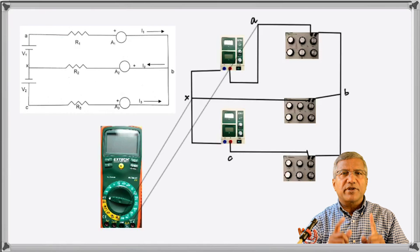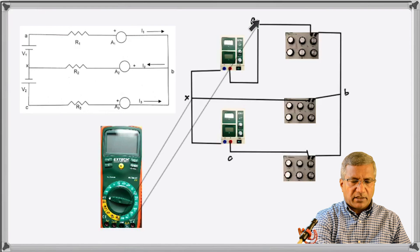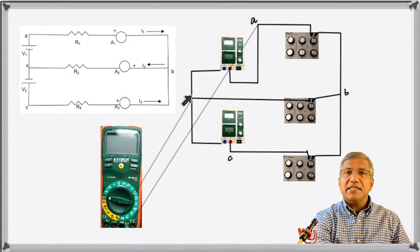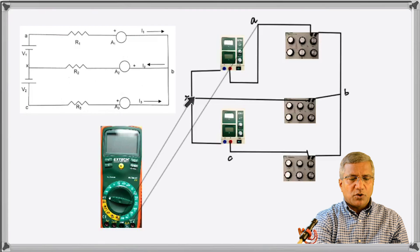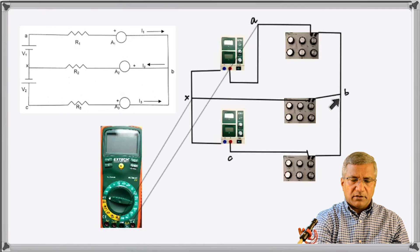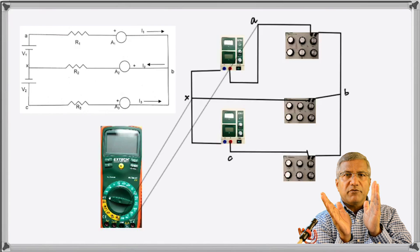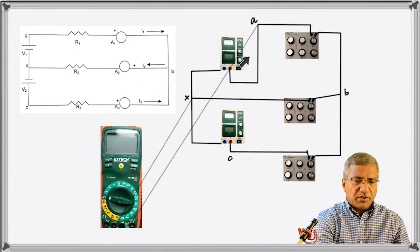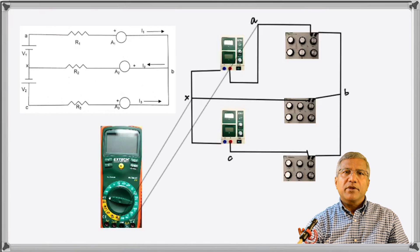We also need to measure three voltages. The first is voltage VA — the multimeter is connected between points A and X. X is where both negatives are connected together, which is the ground or zero reference. Then we remove the connection and connect it across B to get voltage VB. When you move the cable to C, keeping this one at X, you get voltage VC.